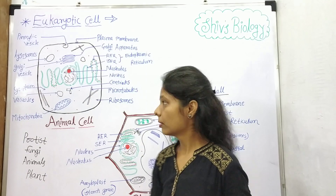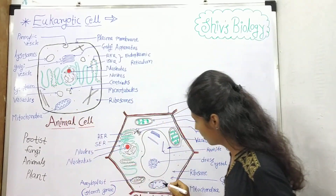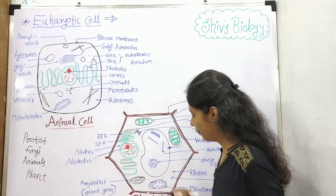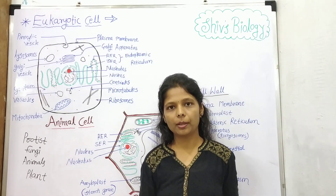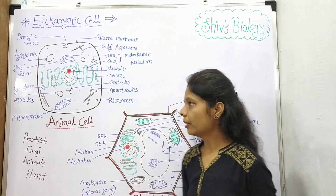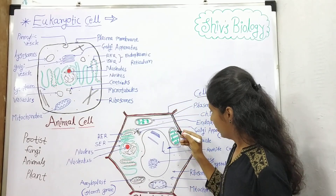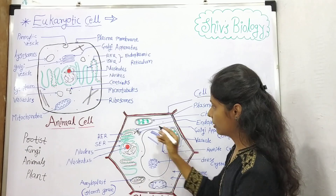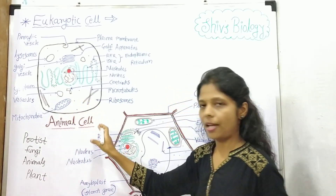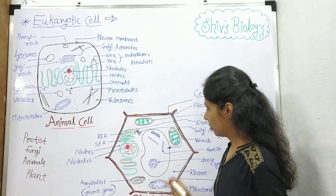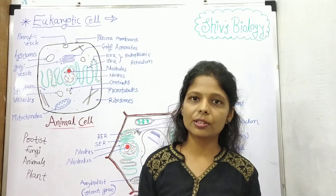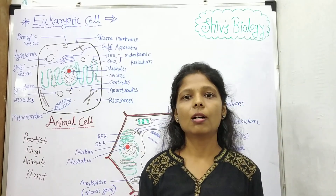Mitochondria is present in both the animal cell and plant cell. Mitochondria generates ATP and that's why it is known as the powerhouse of the cell. Then the chloroplast — in plant cells, chloroplast is present, while in animal cells, chloroplast is absent. Chloroplast is helpful in photosynthesis and also produces energy.